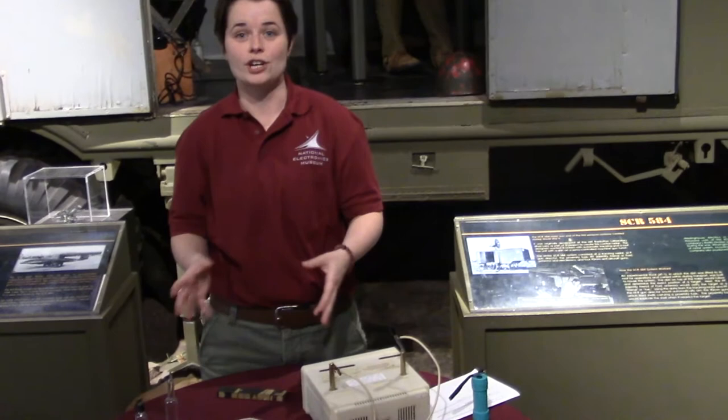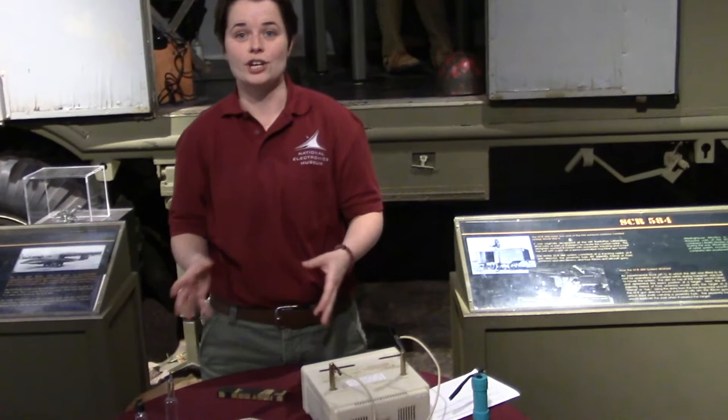So the cathode ray tube was used in a number of experiments and throughout these experiments, some notable things were discovered. X-rays and the electron in 1897 by a guy named JJ Thompson. So as you can see, even though this is more of an experimental type of apparatus, a lot of really neat things came from this.